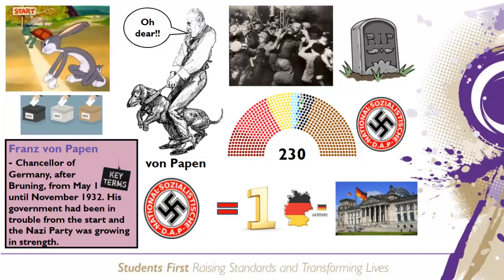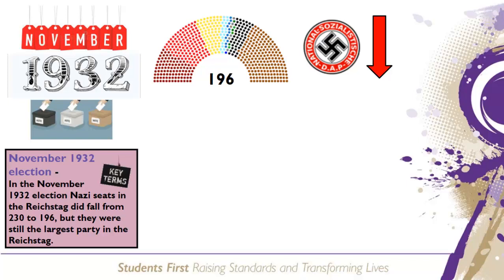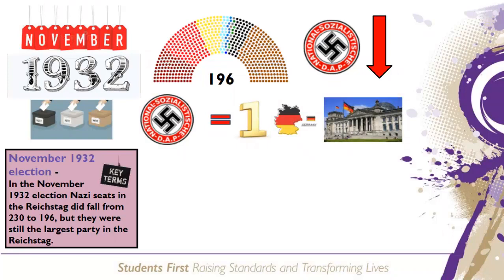Hitler demanded von Papen was sacked and that he was made chancellor. However, Hindenburg refused. To Hindenburg, Hitler was a vulgar, jumped-up corporal, and as a result von Papen clung to office. He called new elections to be held in November 1932, hoping the Nazi share of the vote would fall. In November 1932, the number of Nazi seats did fall to 196, but they were still the largest party in the Reichstag. Von Papen's gamble had not paid off.